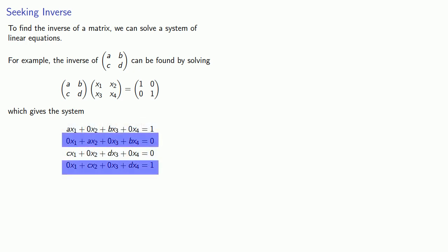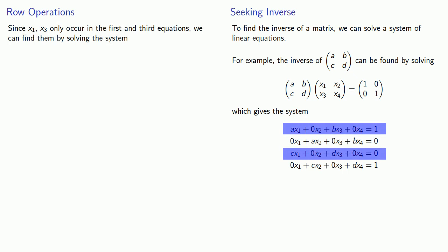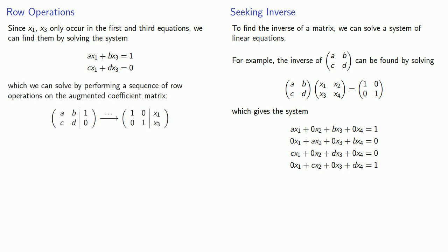Likewise, the second and fourth equations do not include the variables x1 and x3, but do include the variables x2 and x4. Because the variables split this way, I can solve for pairs of variables. For example, since x1 and x3 only occur in the first and third equations, we can solve for them by solving the system ax1 plus bx3 equals 1, cx1 plus dx3 equals 0. And we can solve by performing a sequence of row operations on the augmented coefficient matrix.